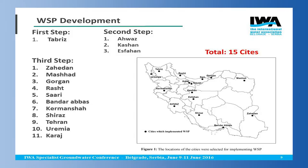You can see the names and locations of the cities where we are implementing WSP. All 15 cities are shown: Tabriz was our first pilot; in the second step we implemented WSP in three additional cities; and in the third step we implemented WSP in 11 more cities.